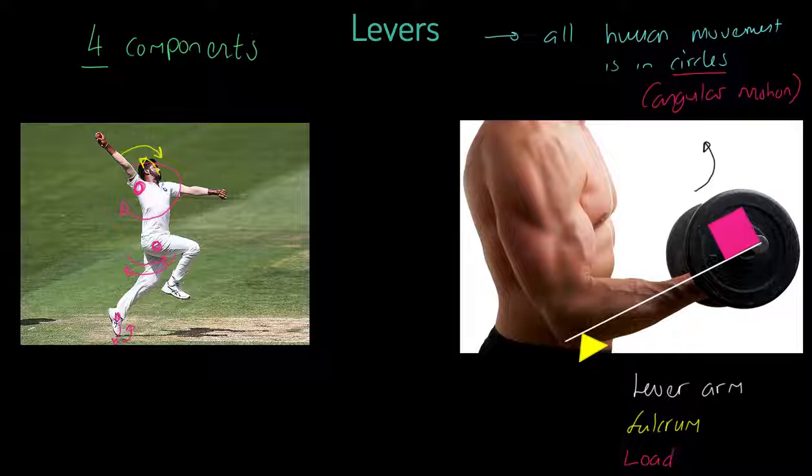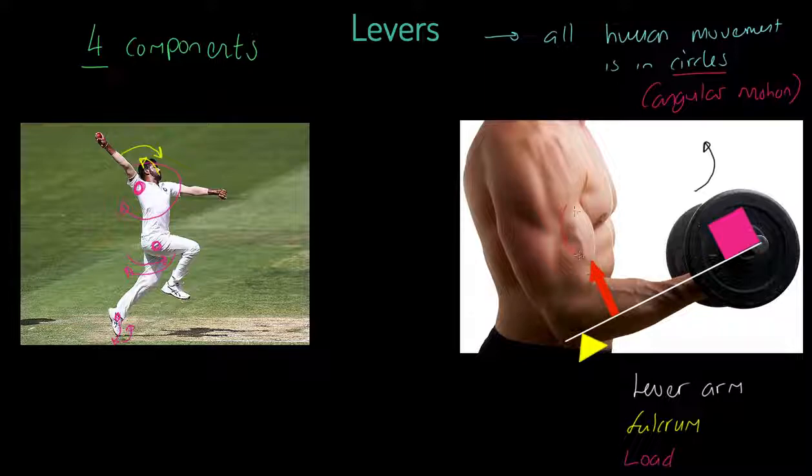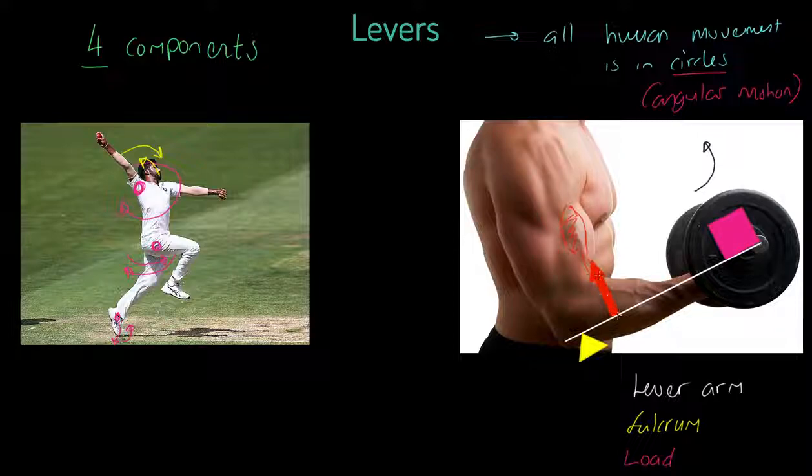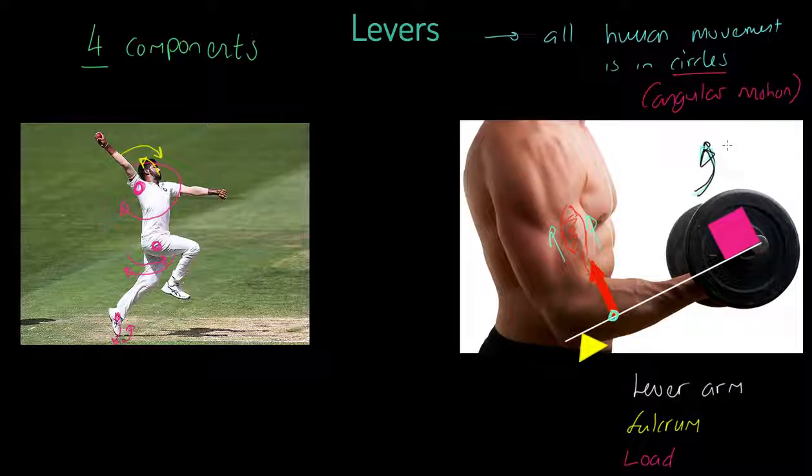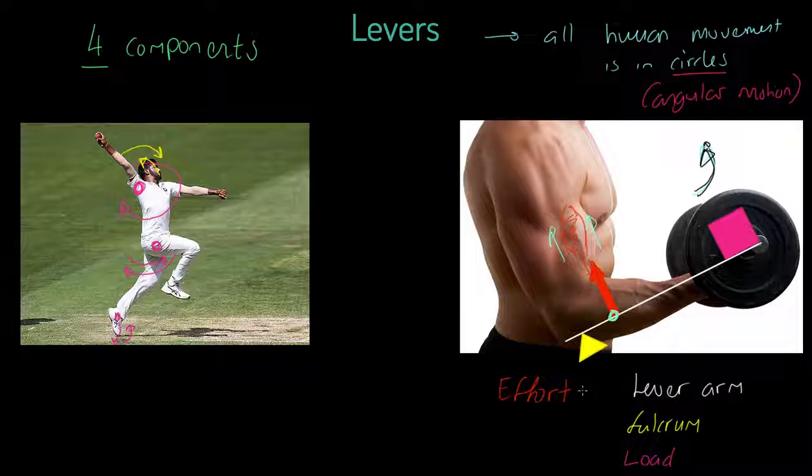And finally, folks, we must have what we refer to as an effort. In this case, we have the bicep, which is here, impressive on this particular person. We've got this bicep and it's inserted down onto the radius about here. So we've got our one, two, three, four components. One, two, three, four components of a lever.